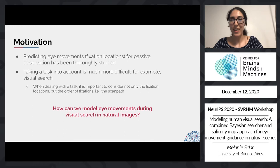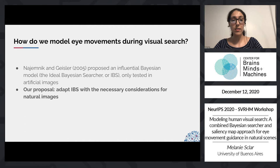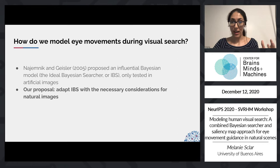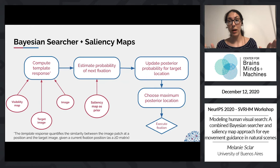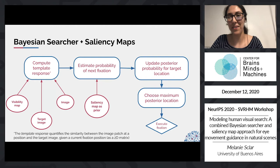There has been some prior work on this, mainly by Adjernik and Gaisler in 2005, who proposed an influential Bayesian model called the Ideal Bayesian Searcher, or IBS for short. However, it has only been tested on artificial images, so our proposal is to adapt IBS with the necessary considerations for natural images. The question then becomes: what should we take into account when adapting IBS to work on natural images?